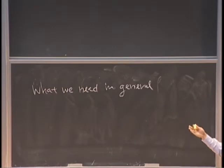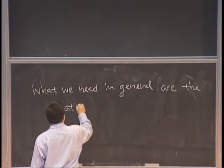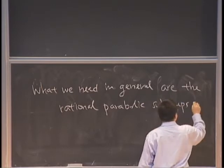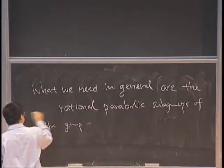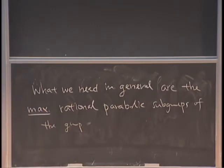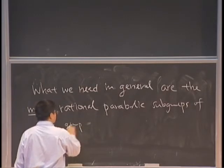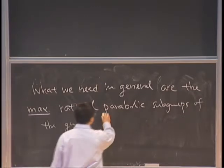For general D, we need the rational parabolic subgroups of the group. Specifically, we need the maximal rational parabolic subgroups. Yesterday we had the Borel-Baily compactification, where you need all the parabolic subgroups, but for the Baily-Borel kind of construction, you only need the maximal ones. It's probably not obvious why this is so, but let's move on and see some examples and hopefully get some intuitive feeling.